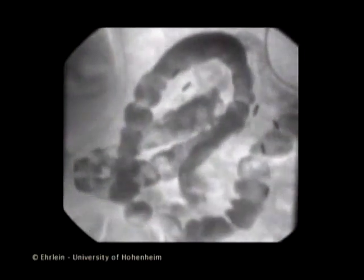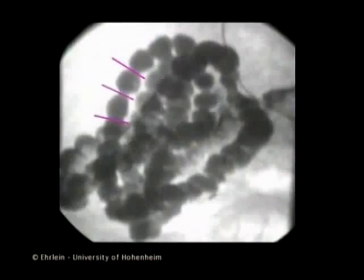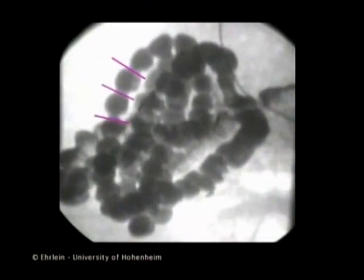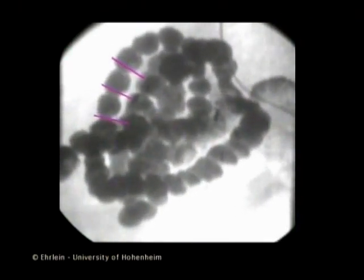Due to the large volume of digesta transferred into the loops, the recurrence of the segmenting contractions is delayed. The following sequences show the aboral migration of the segmenting contractions. You can see that the segmenting constrictions endure over prolonged periods and migrate aborally. The lines help us recognize the slow aboral migration of the segmenting constrictions and thus of the boli.